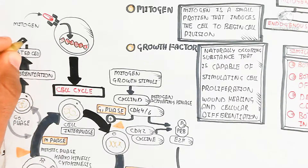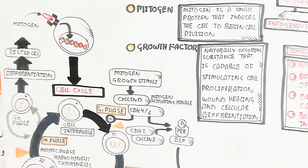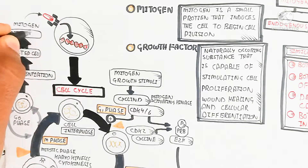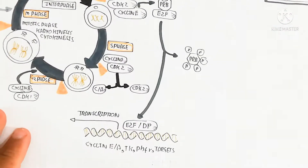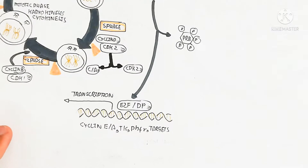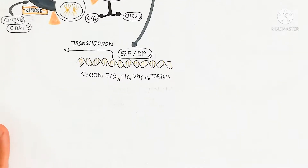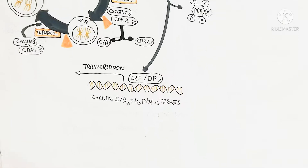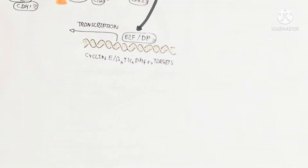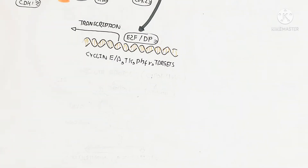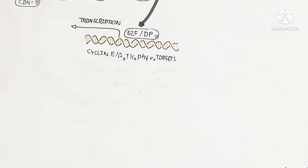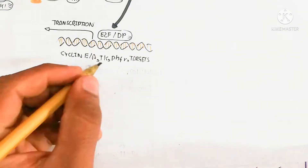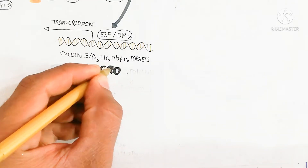Rested cells can undergo apoptosis but do not divide. Division comes from the stem cell. The stem cell is also produced by the cell cycle, and the stem cell produces differentiated specialized cells.